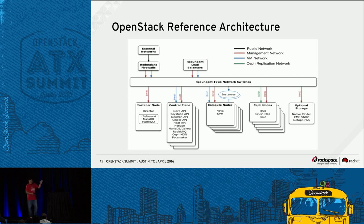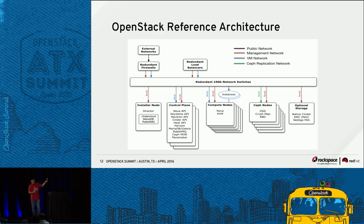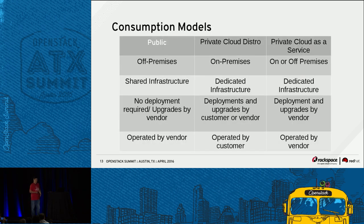This is an example of a reference architecture of what a smallish or typical OpenStack implementation might look like — actually based on Red Hat OpenStack Platform's reference architecture. You can see OpenStack spread out across many components and many servers in order to deliver this cloud computing platform. Let's talk about some consumption models — different ways you can actually use OpenStack today.